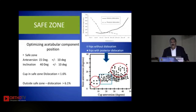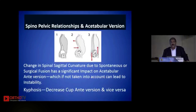The safe zone is something we all have to adhere to. There is a lot of literature on spine-pelvic relationships and acetabular version. The take-home message: if the spine is fused in kyphosis — surgically or due to pathology — decrease the anteversion of the cup. If the fusion is in lordosis, then increase it.